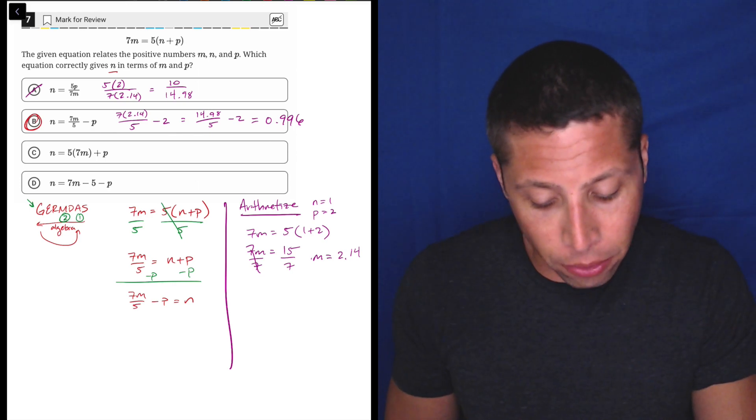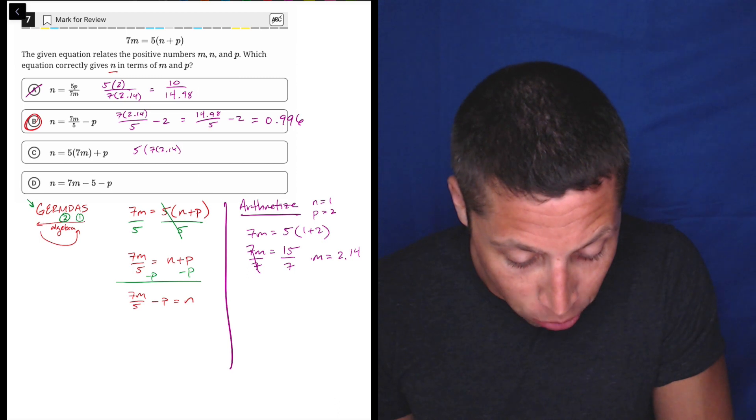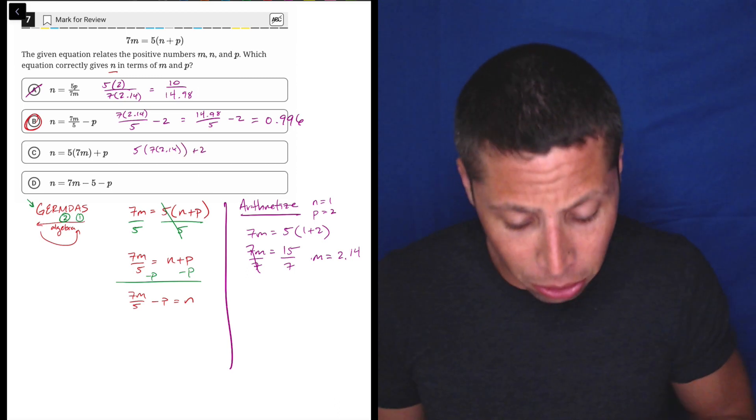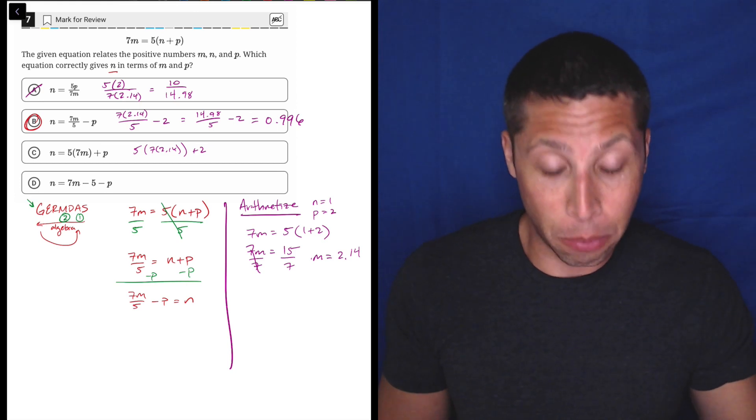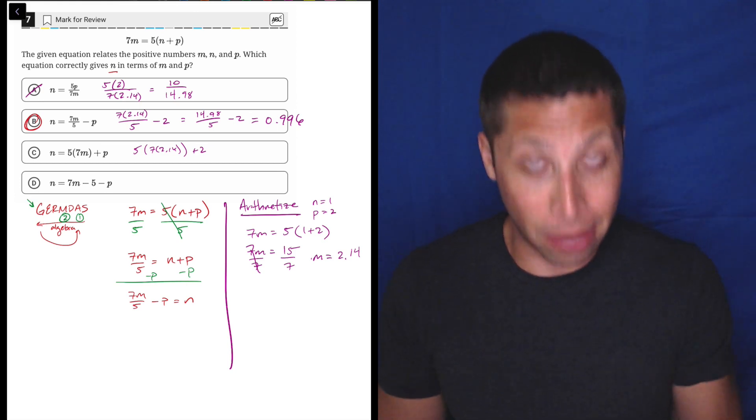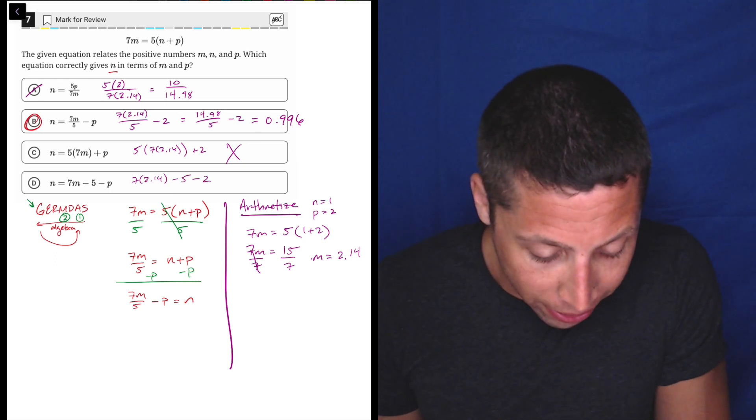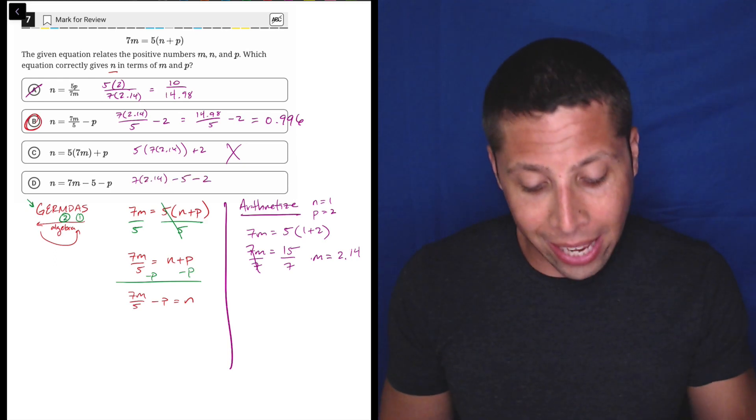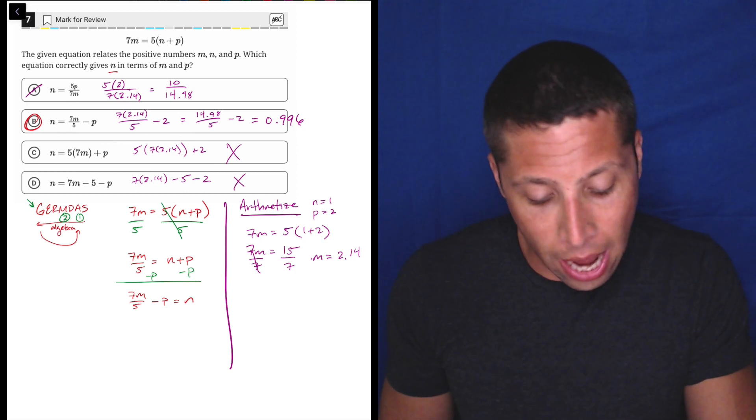I would need to do the same thing for the other two. I can do it really quickly. 5 times 7 times 2.14 plus 2. Obviously, this isn't 1. 7 times 2.14 is that 14.98 times 5 is even bigger. Plus 2 is even bigger. So that's going to be wrong. And 7 times 2.14 minus 5 minus 2. So again, that's 14 or close to 15 minus 5 minus 2, not going to be 1.